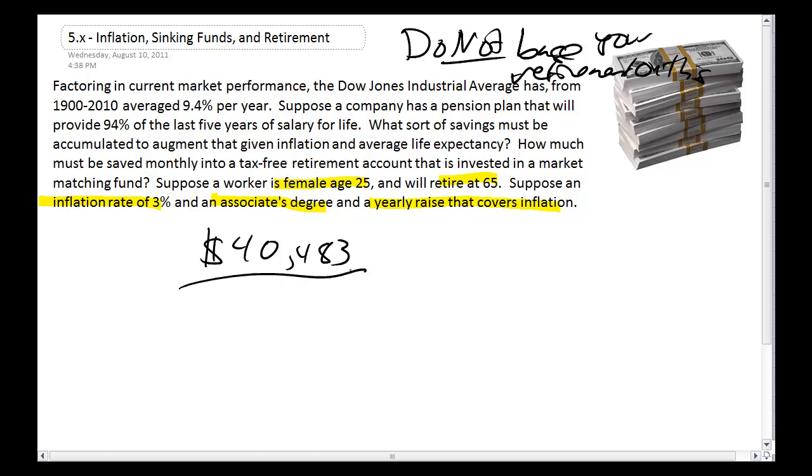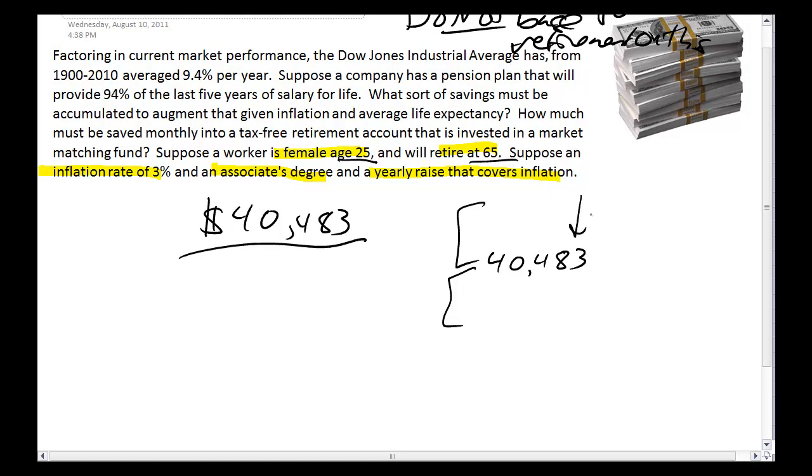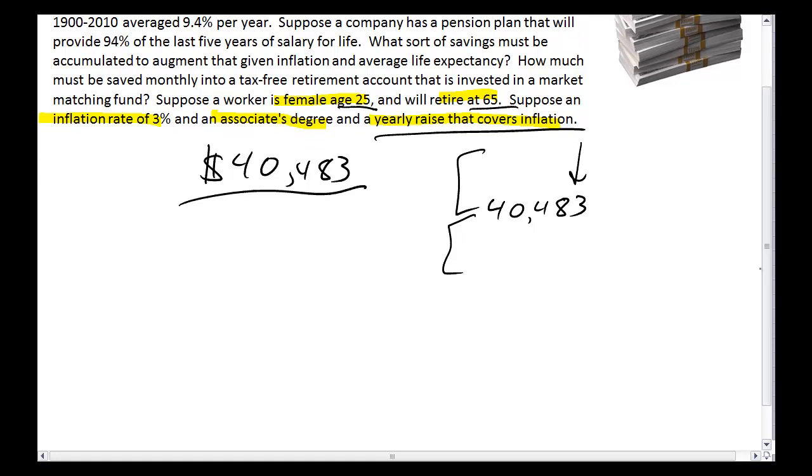If you have an associate's degree and you're a woman, the average salary was $40,483. So in my mind, what that meant was that if you're going to start at age 25 and retire at 65, there's the first 20 years of work, there's the second 20 years of work, and right smack in the middle, there's that average salary. You're going to have started working earning less when you started out. Somewhere in the middle, you'll get that. If you then calculate in a yearly raise that covers inflation, what are you doing? Well, you're using one of our formulas.